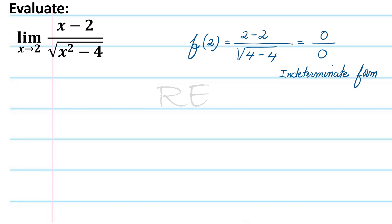Now we're going to rationalize the denominator of the fraction. So x minus 2 over square root x squared minus 4 will be rationalized by multiplying it with square root x squared minus 4 over divided by square root x squared minus 4.